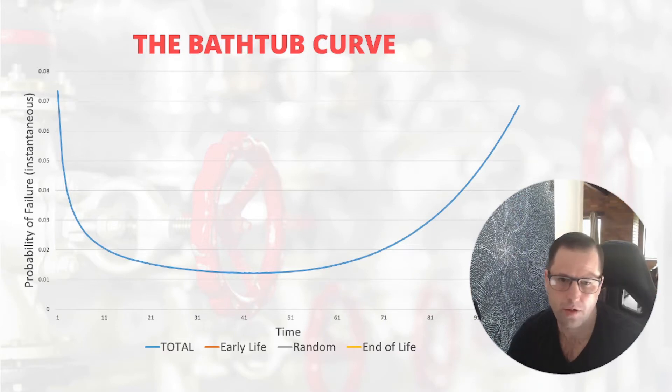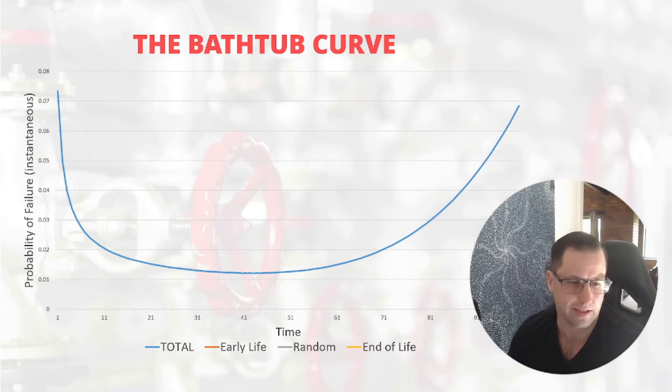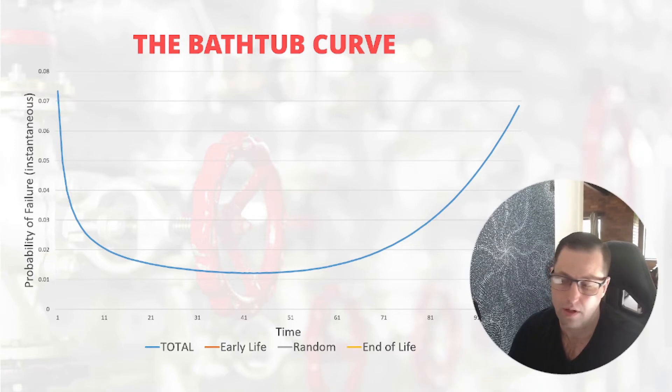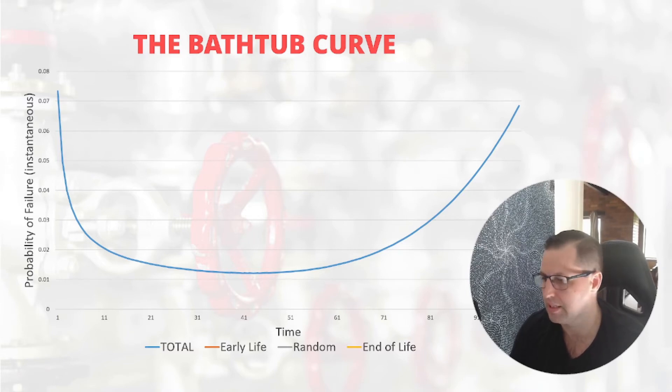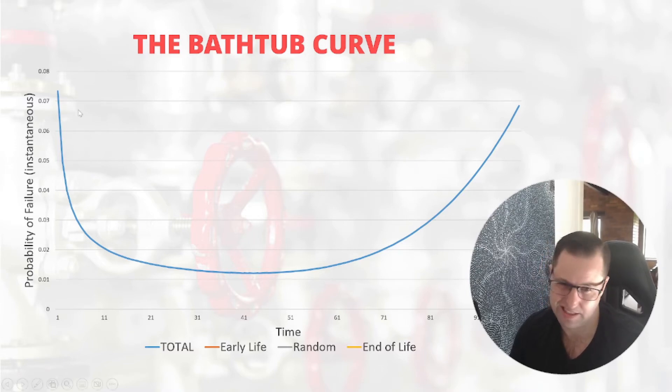Another term that you might hear when you're looking at the bathtub curve is the term infant mortality. This comes from the bathtub curve's use in the study of population life cycles, like human life cycles.